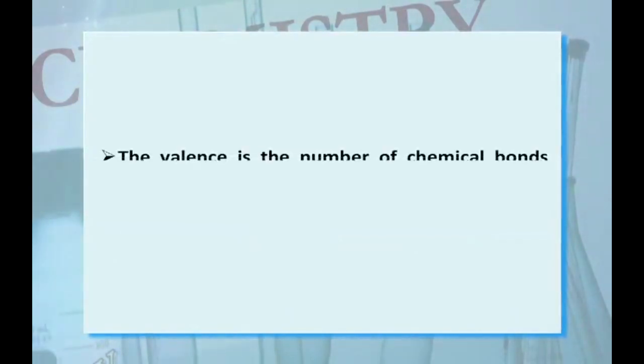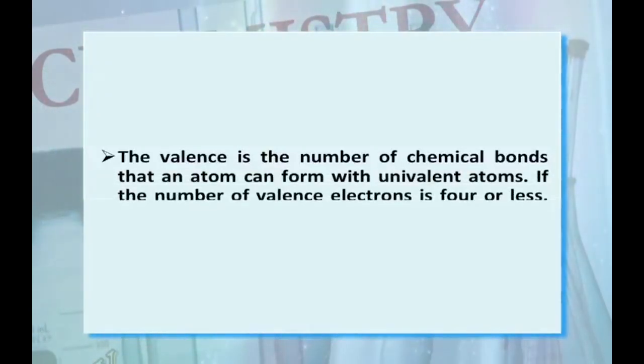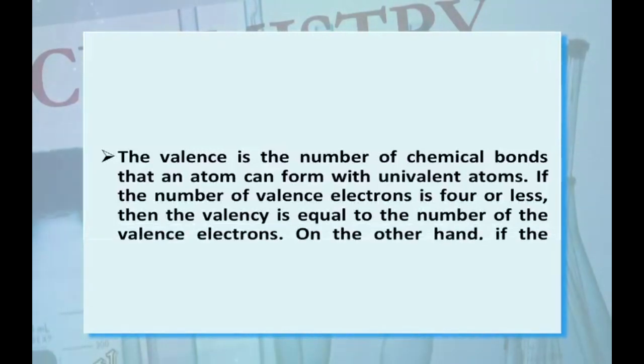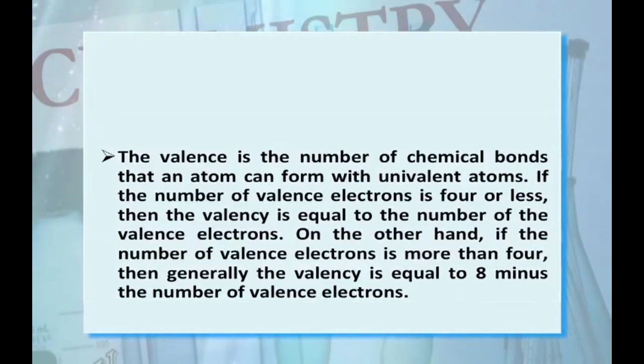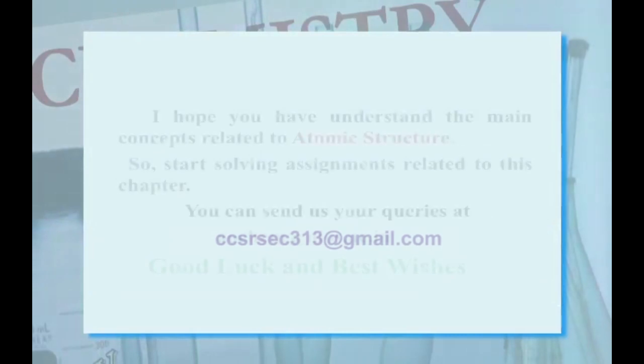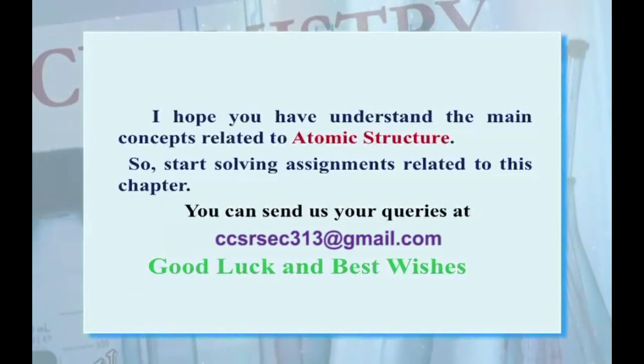The valency is the number of chemical bonds that an atom can form with univalent atoms. If the number of valence electrons is 4 or less, then the valency is equal to the number of the valence electrons. On the other hand, if the number of valence electrons is more than 4, then generally the valency is equal to 8 minus number of valence electrons. I hope you have understood the main concepts of atomic structure. So, start solving assignments related to this chapter and you can also send us your queries at aochem@nios.ac.in. Good luck and best wishes.